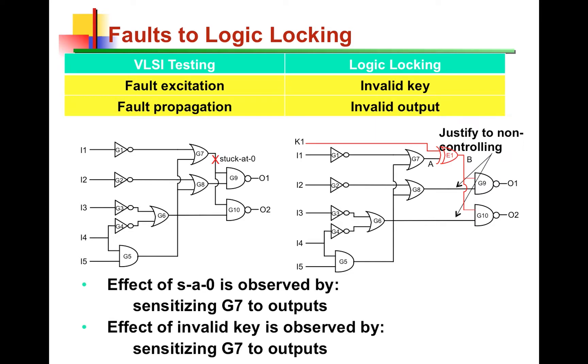Once the fault is excited on the left, in order to observe the fault, it needs to be propagated to the output, that net needs to be sensitized to the outputs, which require setting all the side inputs of the gate on the way to non-controlling values. And we expect the same requirement on the right as well, when the incorrect key is applied and the net produces an error as a result of the incorrect key. For us to be able to observe the effect of this incorrect key, this net, this key gate output, needs to be sensitized to the outputs, so that the error is propagated to the outputs, and the outputs are corrupted.